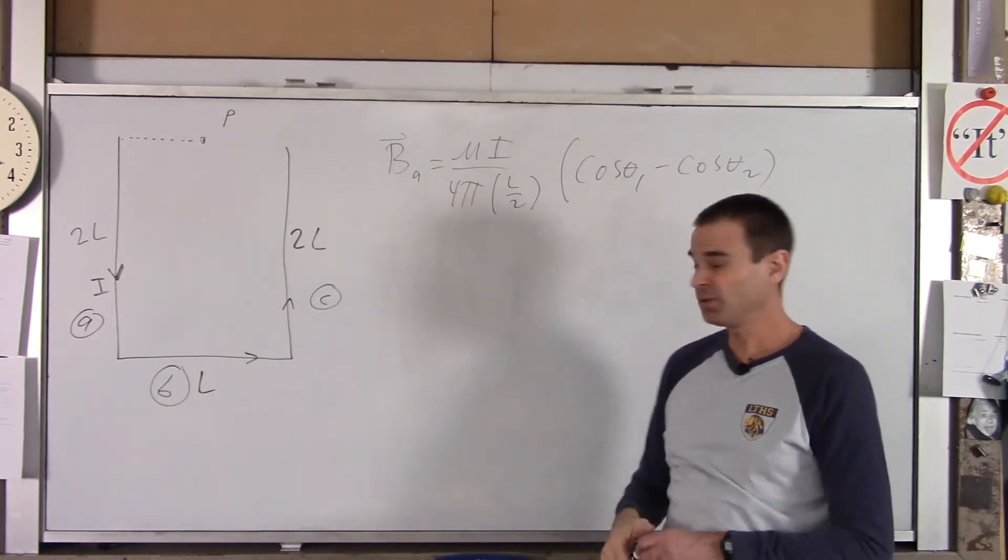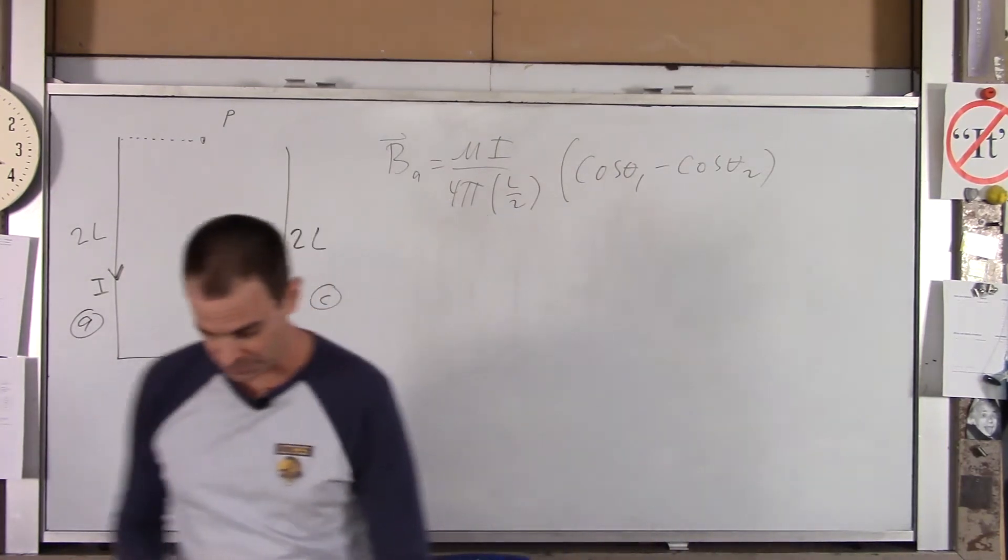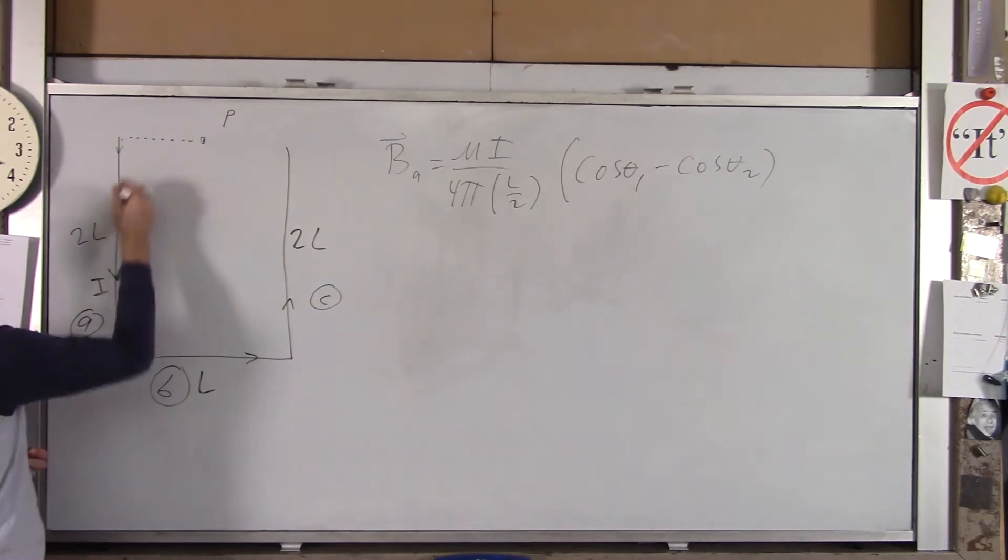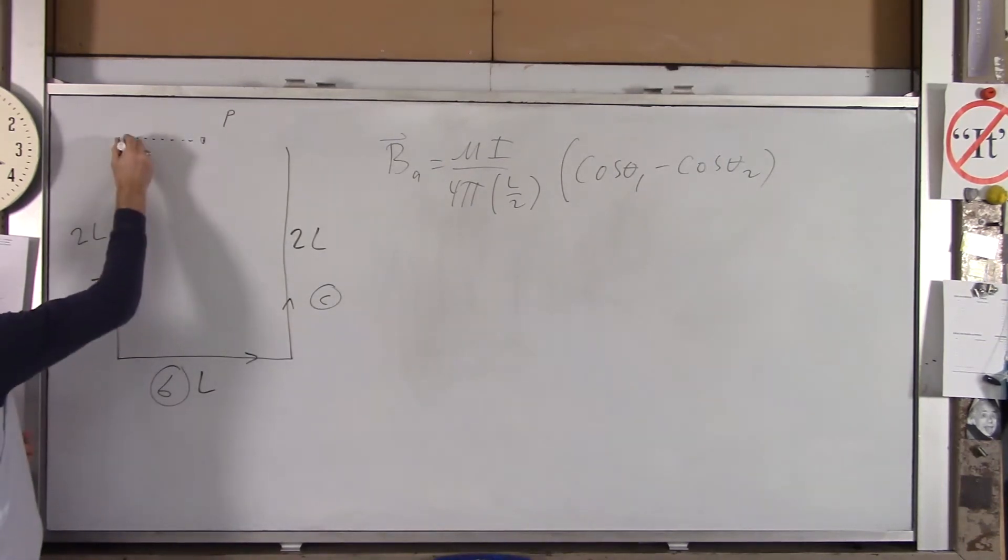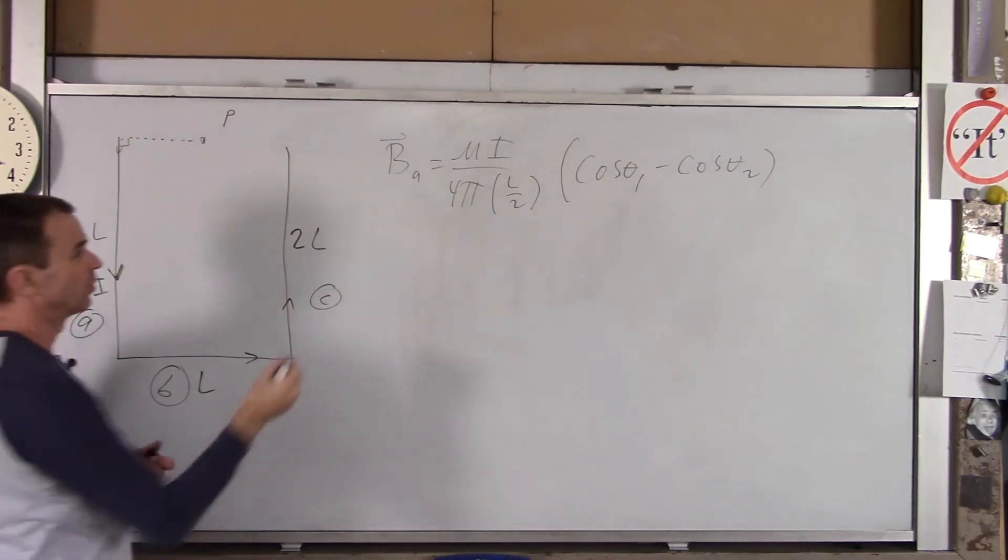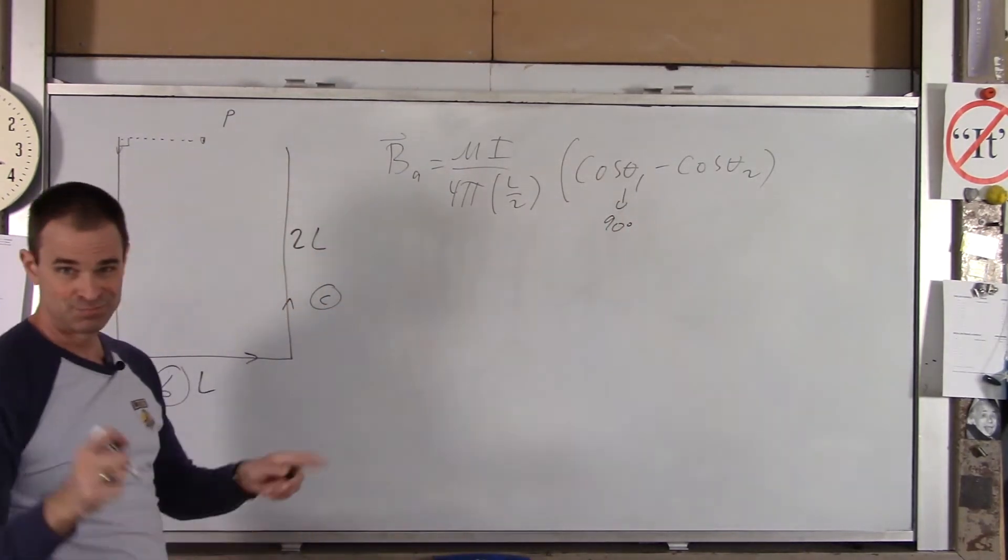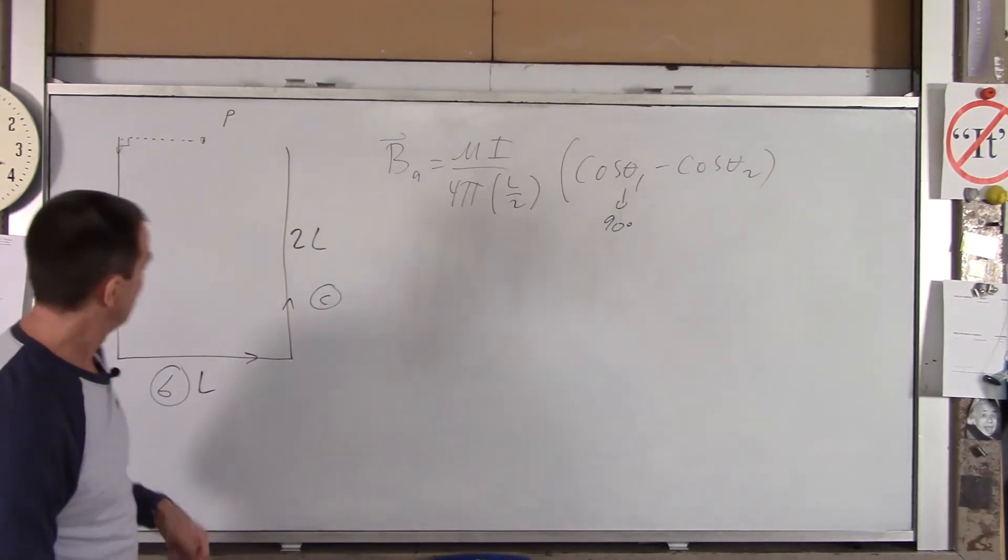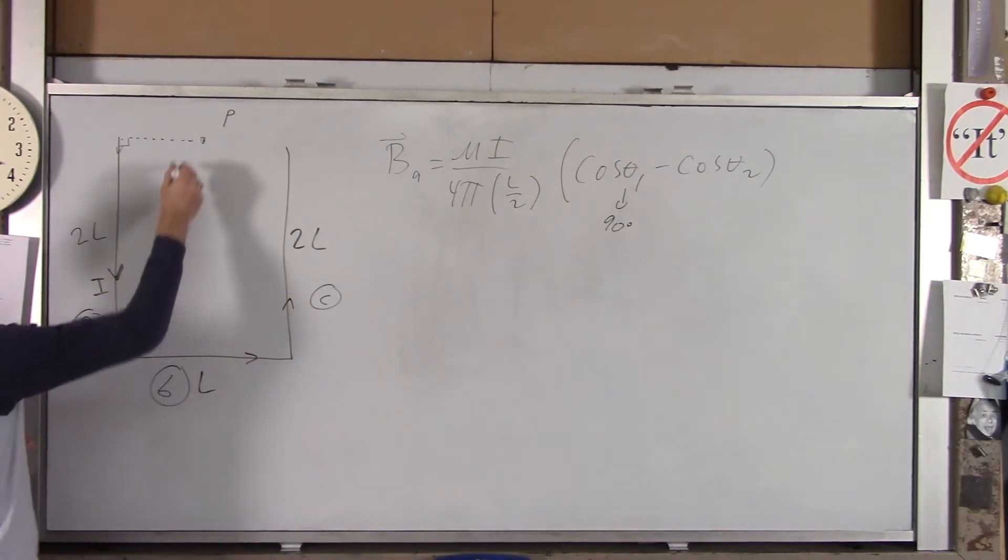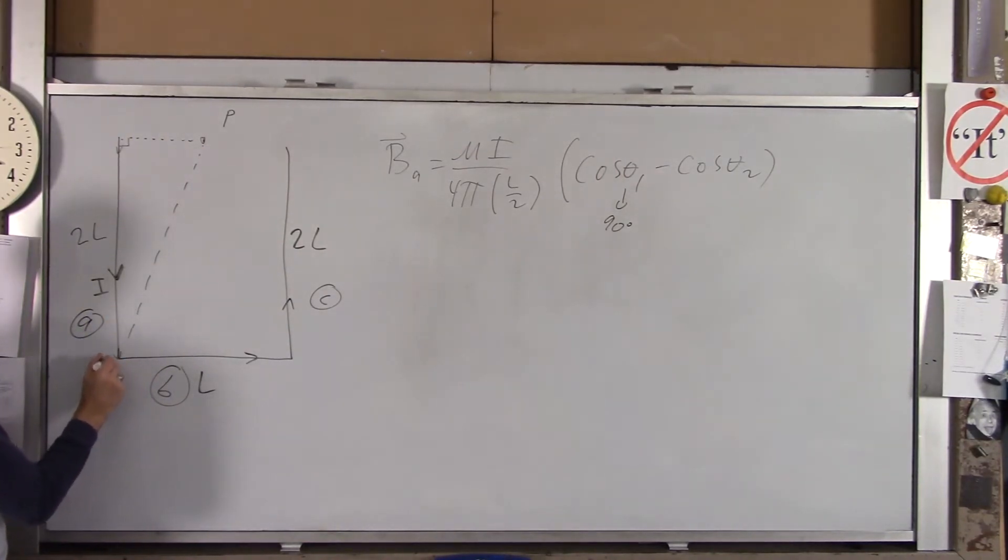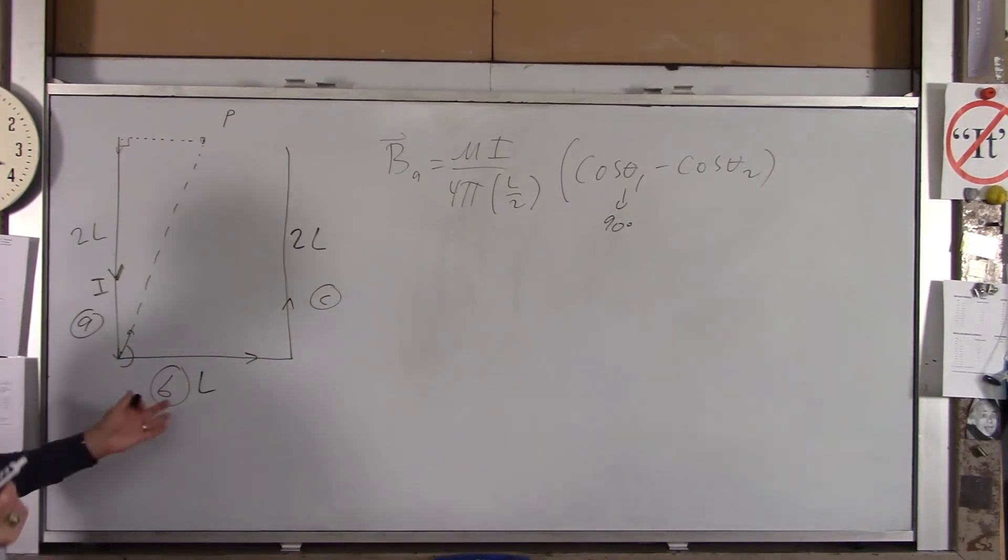So the only other thing you got to do here is figure out, well, what's theta 1, what's theta 2? Well, the first current is right there. That's the beginning of this current. That angle is 90 degrees. So theta 1 is 90 degrees, and cosine of 90 is 0. Theta 2, well, here is R2. There's the last current. There's our radius. There is our angle, which is obtuse.